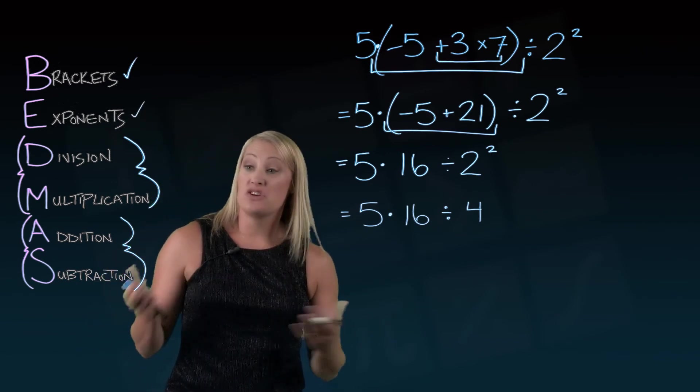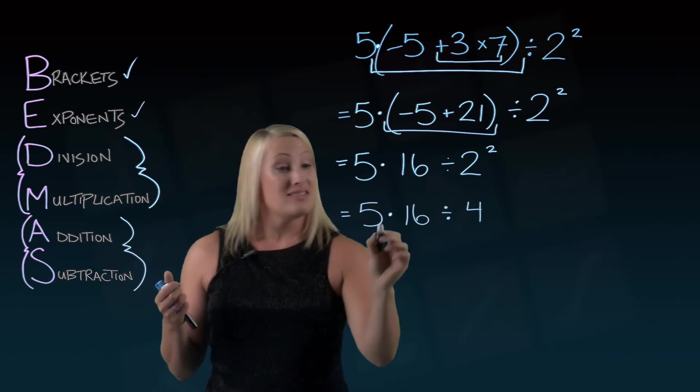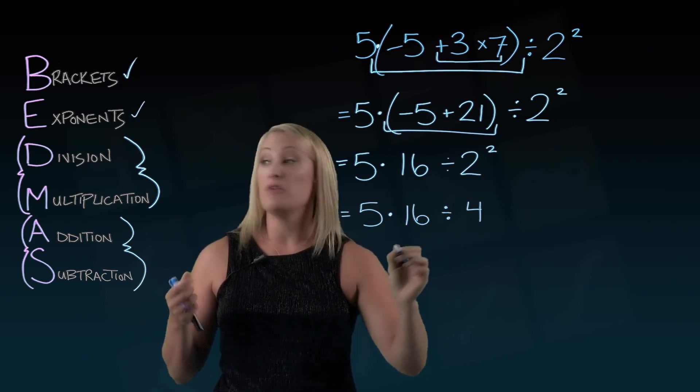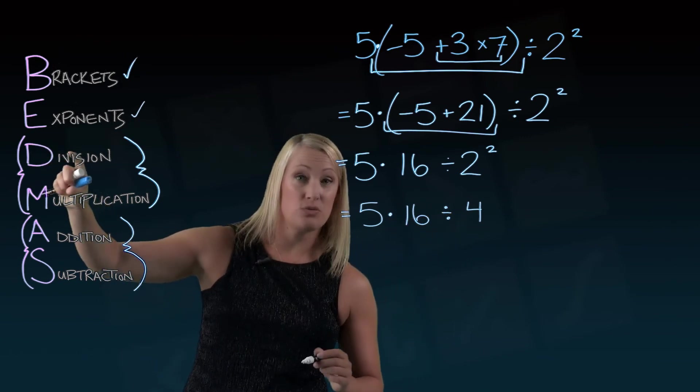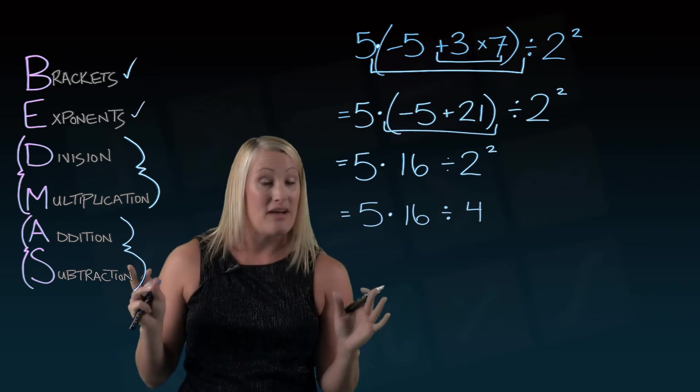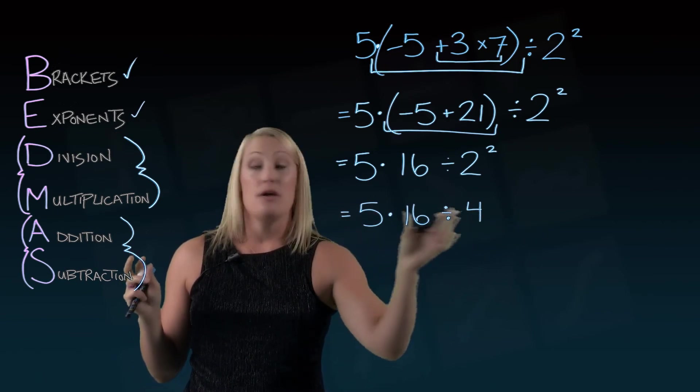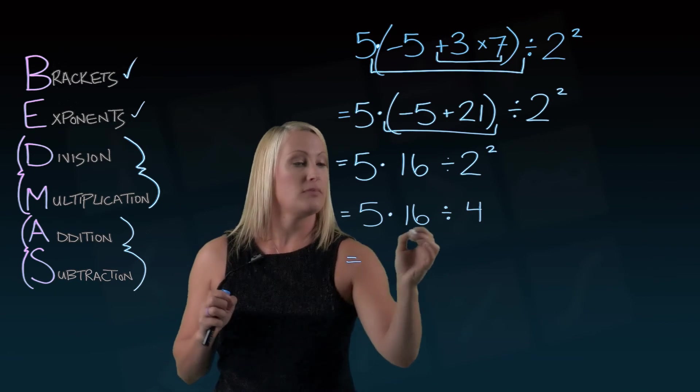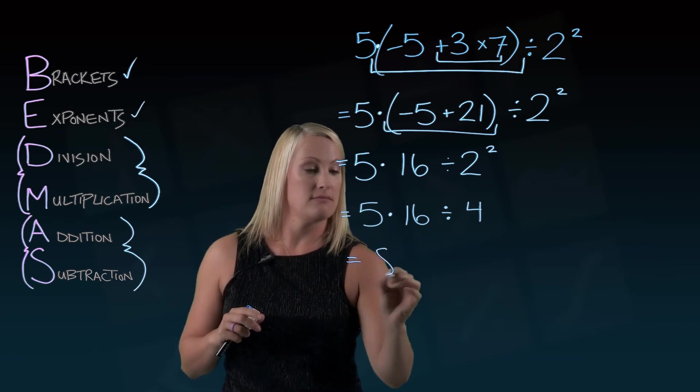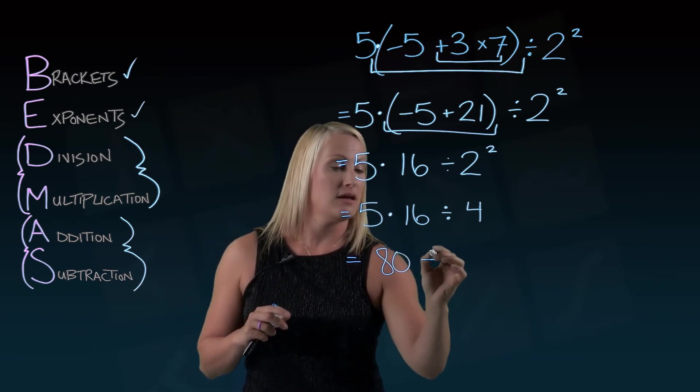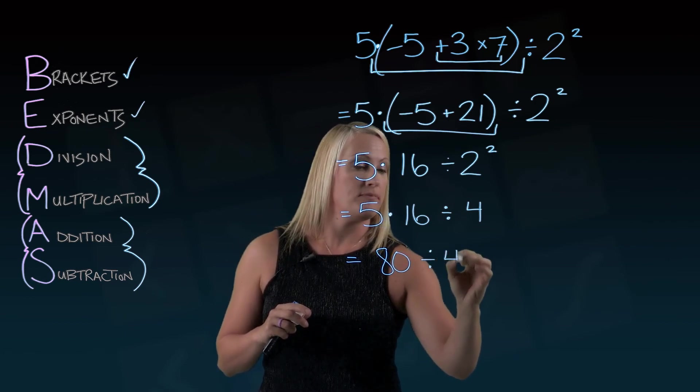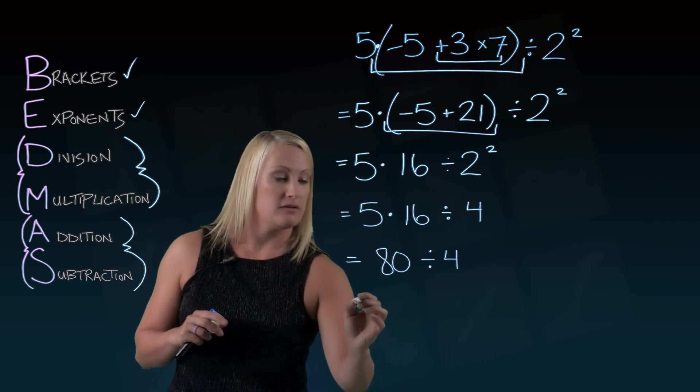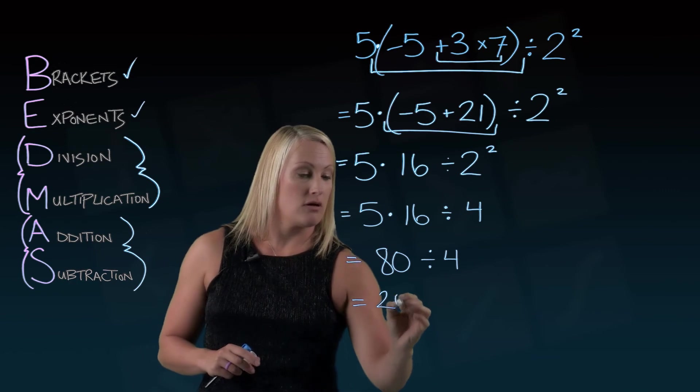So now I've dealt with my exponents. Now I'm going to do division and multiplication and it looks like the multiplication comes before the division even though division is written here first. But it doesn't matter. 5 times 16 which is 80 one step at a time. And then I'll deal with this last. 80 divided by 4 is 20.